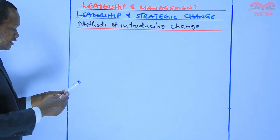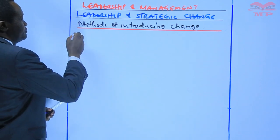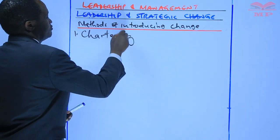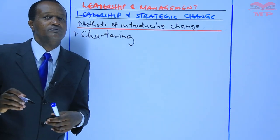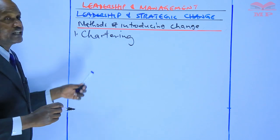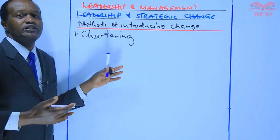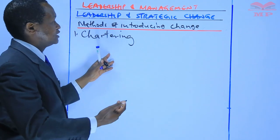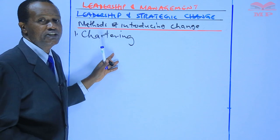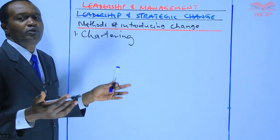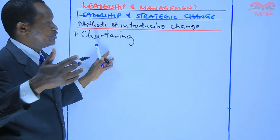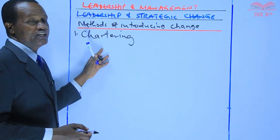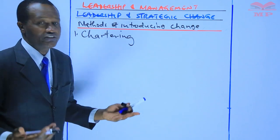The first method is known as chartering. Chartering is the process by which the organization defines the objectives of change. It defines the scope of change and also the way people will work with one another on the change program. Under chartering, the change manager should be able to do what we call boundary setting.